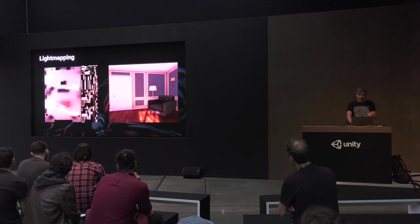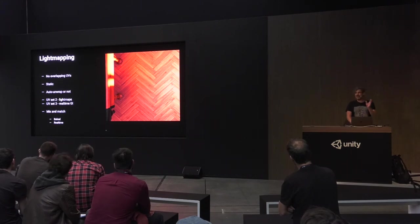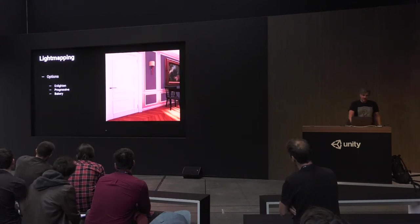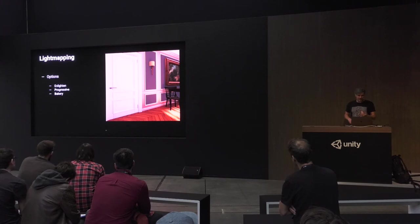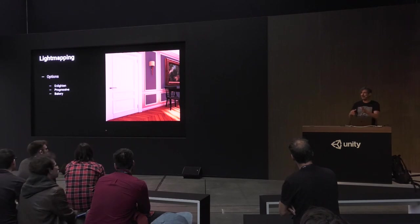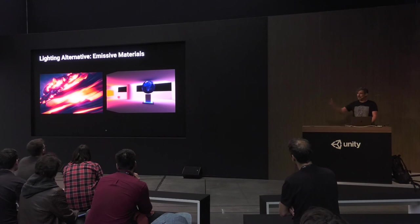Light mapping saves time on rendering lighting. You don't want overlapping UVs, and you have to have meshes set to static. Your options are Enlighten, Progressive Mapper, and Bakery. Bakery is the best — it only works on NVIDIA, but I can bake in five minutes what takes ten hours in Enlighten, and the file sizes are ten times smaller. You can also light with emissive materials.